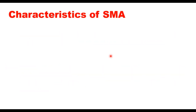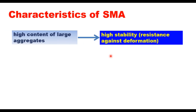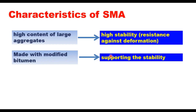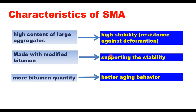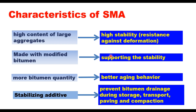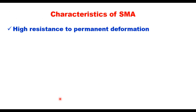There are certain characteristics of SMA which are not found in any other bitumen layer. First, it contains high content of large size aggregates that provides stability, i.e. resistance against deformation. Second, it is made with modified binder that supports stability in the mix. Third, it has more bitumen quantity — it is a bitumen-rich mix — that provides better aging behavior. Fourth, it contains stabilizing additive. Since it is a bitumen-rich mix, there is a possibility of bitumen drainage during storage, transport, paving, and compaction. To avoid that drain down, we use stabilizing additives in the form of cellulose fiber. This mix provides high resistance to permanent deformation.